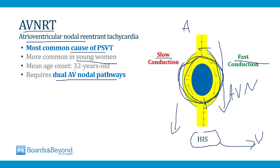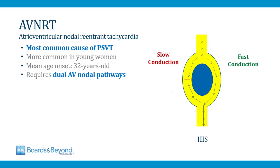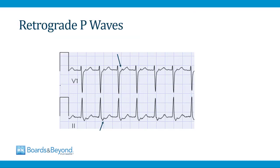On a board question, a person with AVNRT causing a PSVT will most likely be a young woman complaining of palpitations. A hallmark ECG feature of AVNRT is the presence of retrograde P waves. When the circuit of electricity goes around the AV node, some impulses travel backwards up to the atria, generating a retrograde P wave after each QRS complex. On the ECG, after each QRS complex there is a little bump — that retrograde P wave — and that is a classic finding in patients with AVNRT.